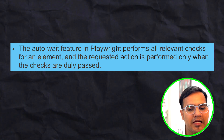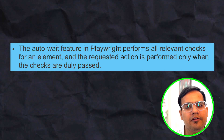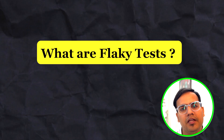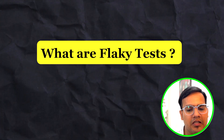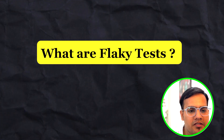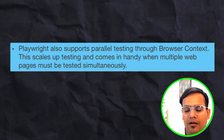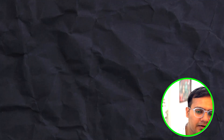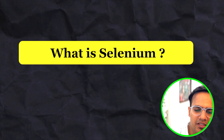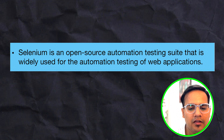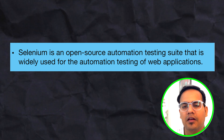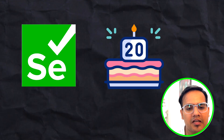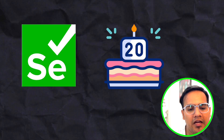Since auto-wait is built in, we get relief from flaky tests — tests that pass one time and fail another. Reducing flakiness is another top feature of Playwright. Playwright also supports parallel testing through browser context. Now coming to Selenium — if you are an experienced automation tester, manual tester, or working in the IT industry, you must be aware of it. It is very widely used and recently celebrated its 20th anniversary, having been founded in 2004.